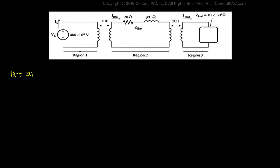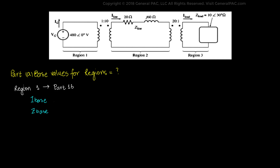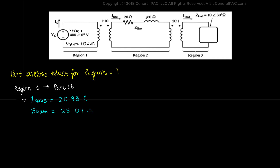Now Part A: find out the base values of the different regions. We solved this in our previous video. For Region 1, we calculated the base value for I-base and Z-base using the given values of V-base and S-base. The answers were: I-base equals 20.83 amps and Z-base equals 23.04 ohms.